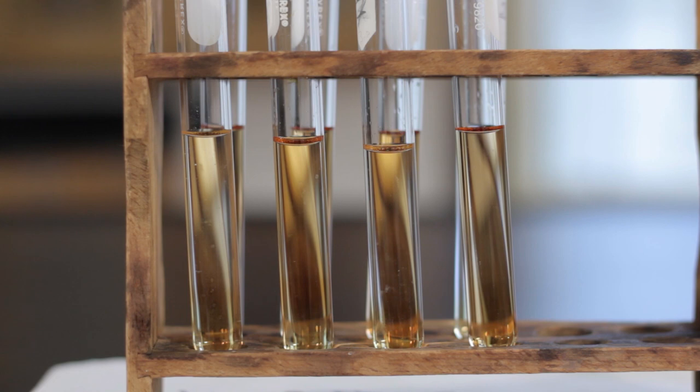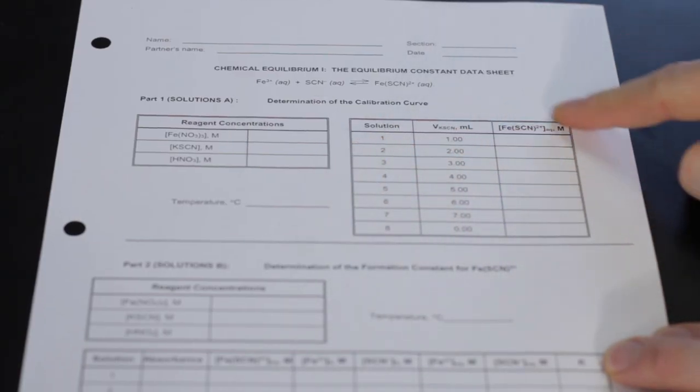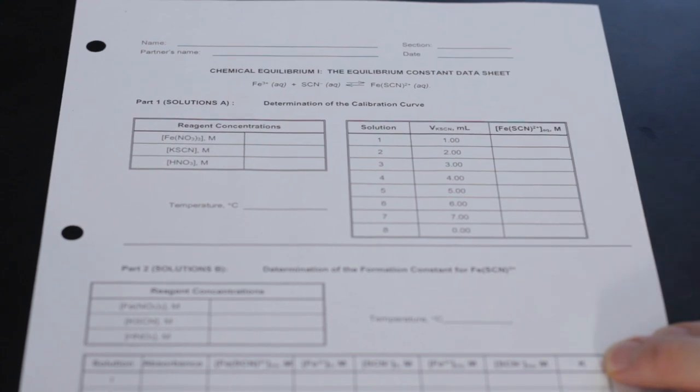It is normal that the liquid level between the test tubes is different since the diameters of the test tubes are often quite variable. Calculate the concentration of the thiocyanate in the eight solutions and record their values as they are needed for Logger Pro.